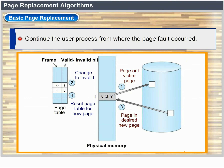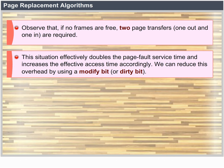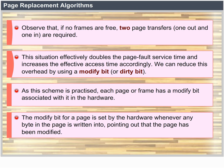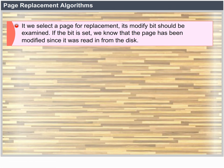Notice that if no frames are free, two page transfers — one out and one in — are required. This effectively doubles the page fault service time. We can reduce this overhead by using a modify bit or dirty bit. When this scheme is used, each page or frame has a modify bit associated with it in the hardware. The modify bit for a page is set by the hardware whenever any byte in the page is written into, indicating that the page has been modified.